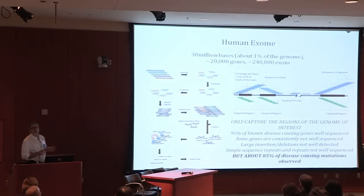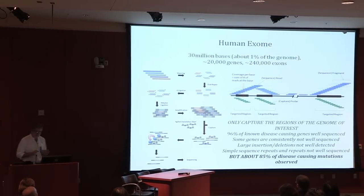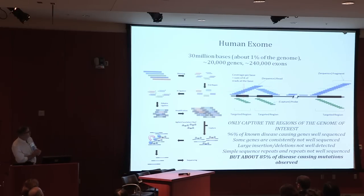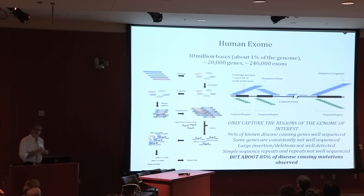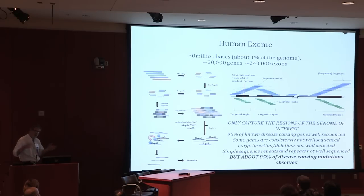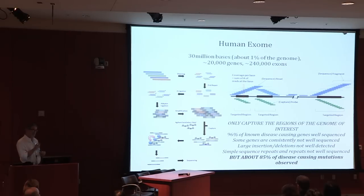Human exome sequencing is a sampling of the genome — a targeted, intelligent sampling focused on technologies coming from the University of Washington, where one is trying to pull out simply the protein-coding portions of the human genome, largely because that's where more of the meat is for causing human genetic disorders. We estimate, on a variety of different bases, that about 85% of known disease-causing mutations across the spectrum of genes are due to alterations in protein-coding sequence, encoded within the exonic portion of the genome.